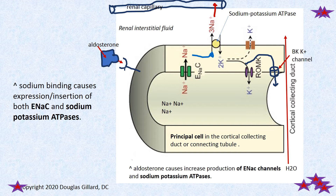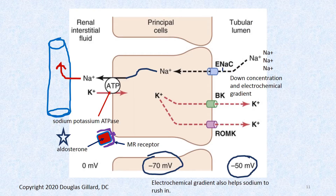Just another example: aldosterone binds, and so an ENAC channel is made, and then a sodium-potassium ATPase pump is made. There's also a millivolt electrical gradient that it tends to go down. It's a nice picture for the ROMK channels and BK channels — we'll talk about those in a bit.